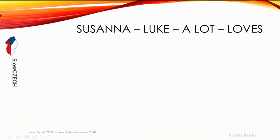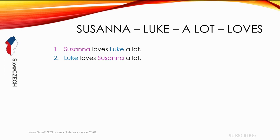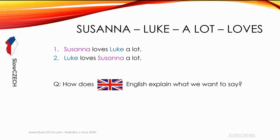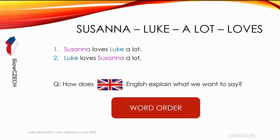Let's have a look at these words: Susanna, Luke, a lot, loves. What sentence can we create? We can say 'Susanna loves Luke a lot' or 'Luke loves Susanna a lot' — which has a different meaning. So how do we know who is doing what? How do we know who loves who? In English, the word order is important. To indicate who loves who, English uses word order.